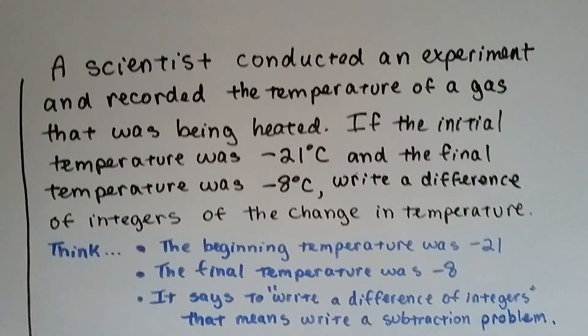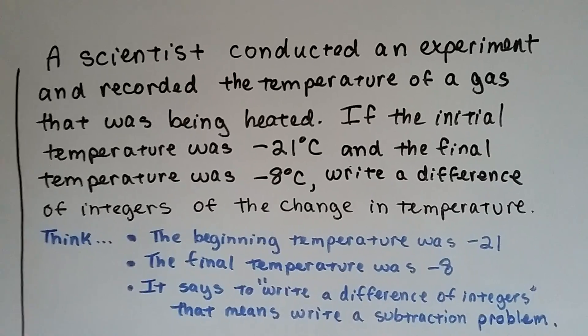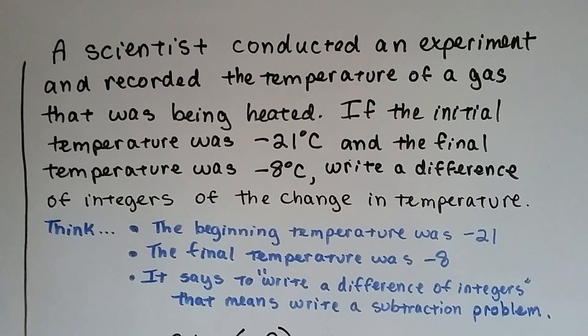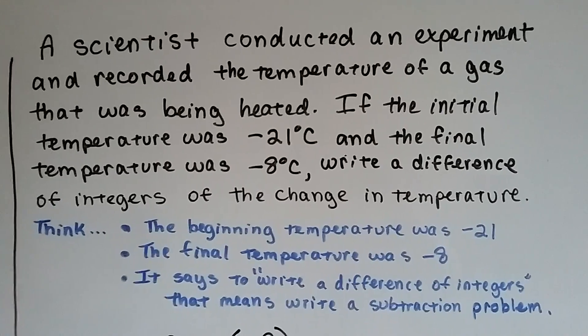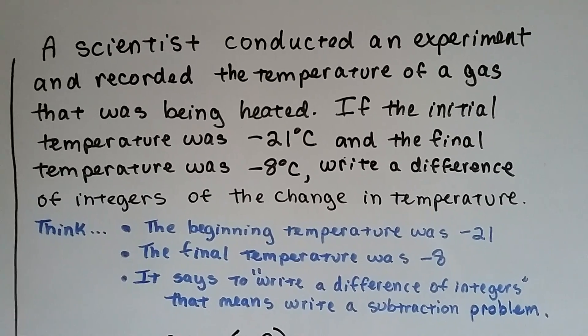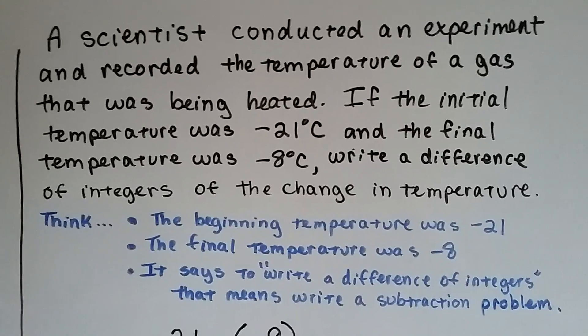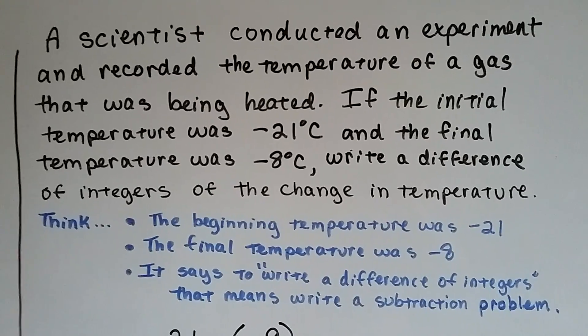Okay. So, a scientist conducted an experiment and recorded the temperature of a gas that was being heated. If the initial temperature was negative 21 degrees Celsius and the final temperature was negative 8 degrees Celsius, write a difference of integers of the change in temperature.